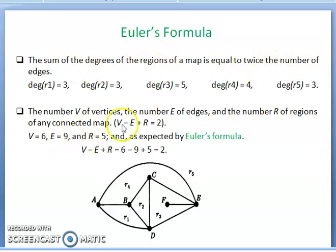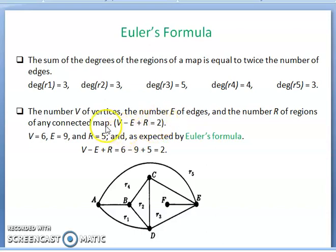Now Euler's Formula: V minus E plus R equals 2, where V is the number of vertices, E is the number of edges, and R is the number of regions.